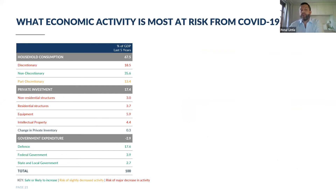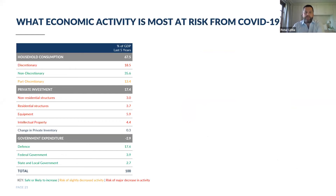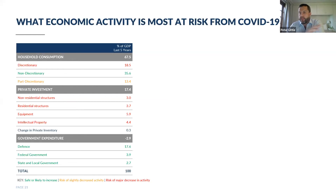Drilling down into each area of economic activity to identify what's most at risk — I've used a traffic light system across three sections: household consumption, private investment, and government expenditure. Red highlights areas most likely to see significant drops in activity, orange indicates some potential drop, and green marks areas that are pretty safe or might even see an increase in spending.